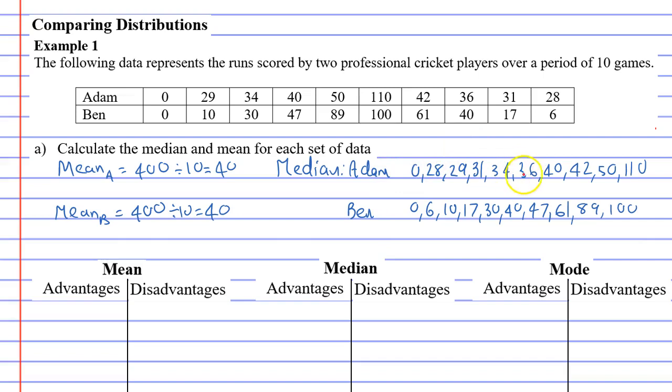For Adam, the median is going to lie here halfway in, so the median is 35. For Ben, the median is going to lie between the 30 and 40 and that's 35 as well. So they both have the same median and also the same mean.